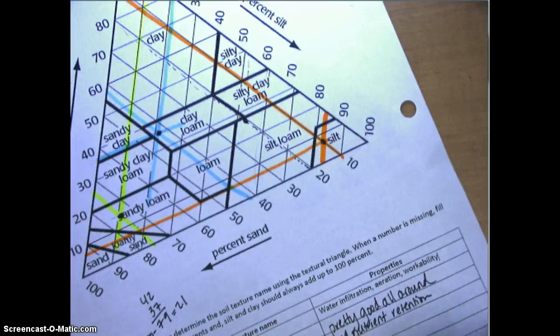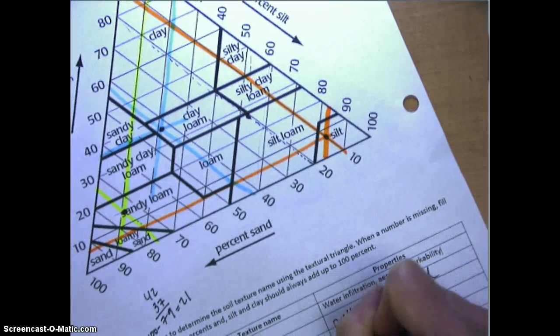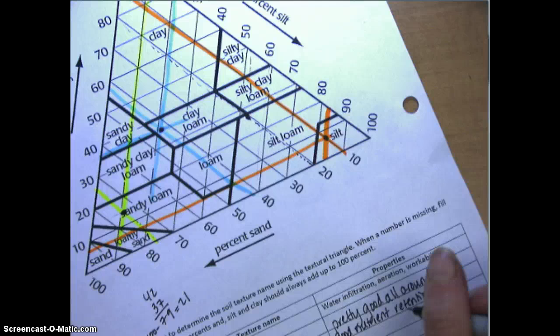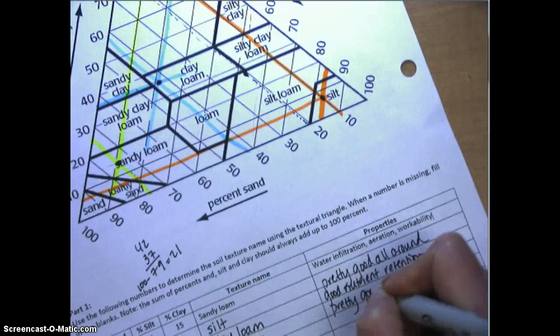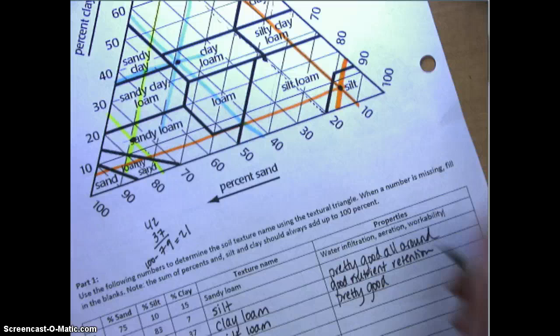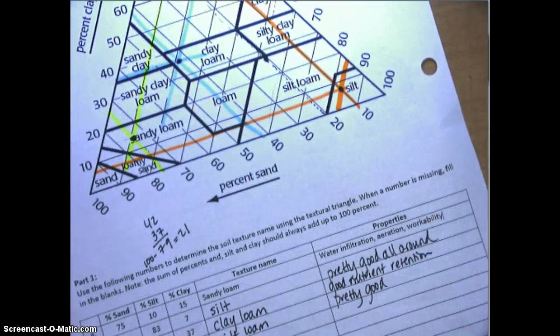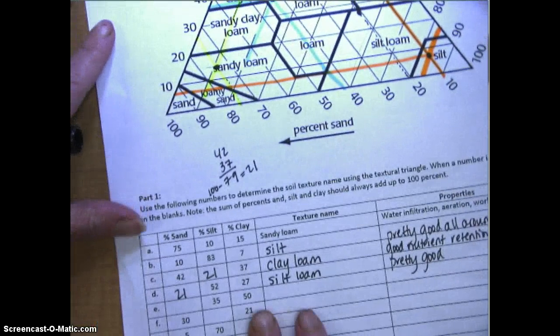Silt loam is probably pretty good all around. Really what's not good in terms of workability is clay. Not good in terms of permeability is clay because of course pore space would be so small. Sand would have high permeability because of the large grains and large pore spaces between the grains.